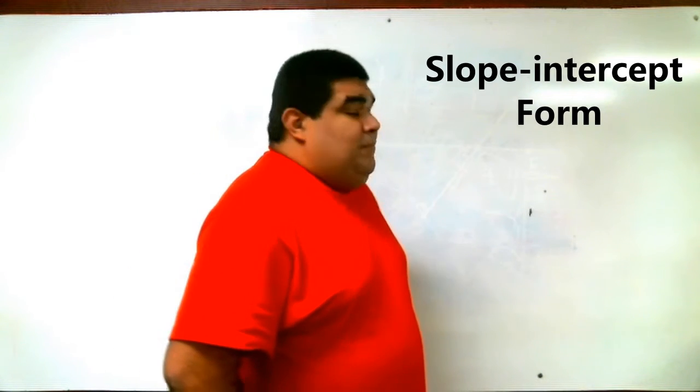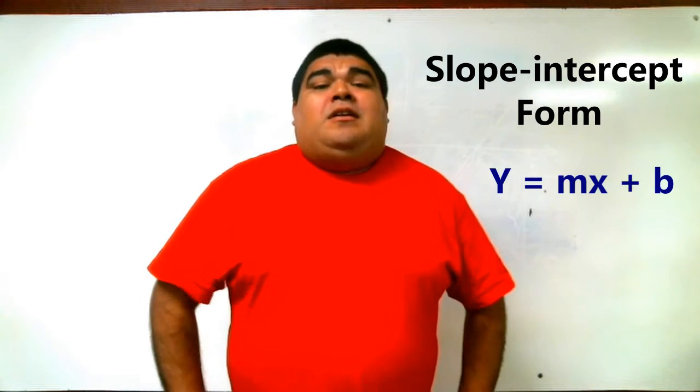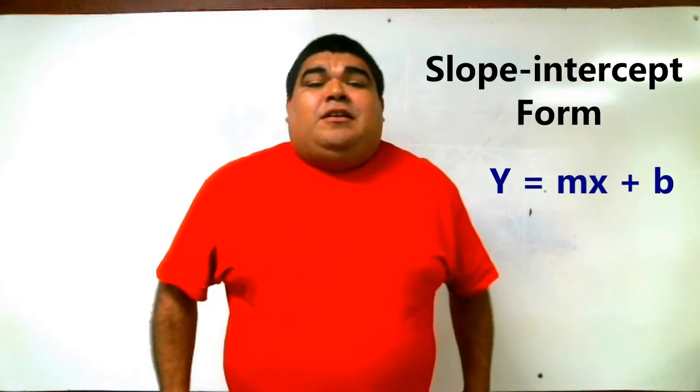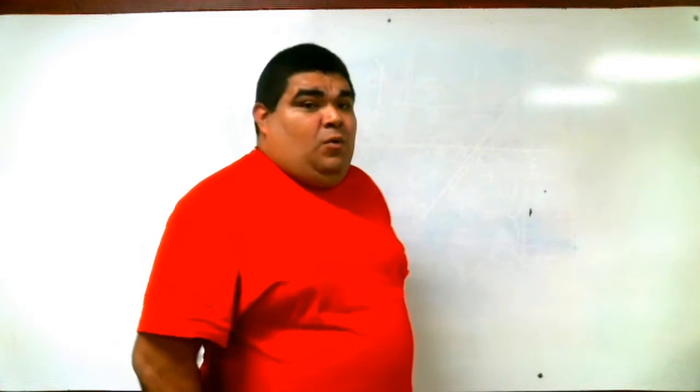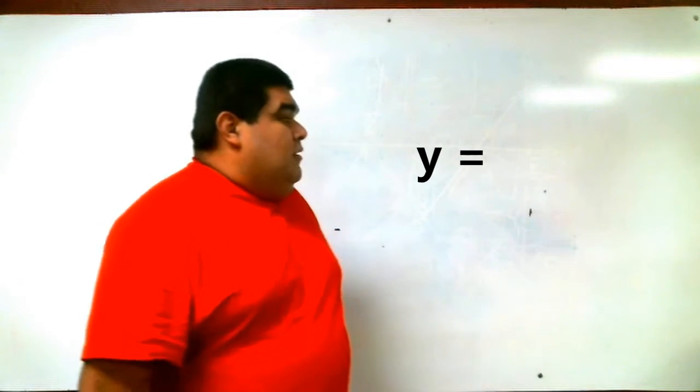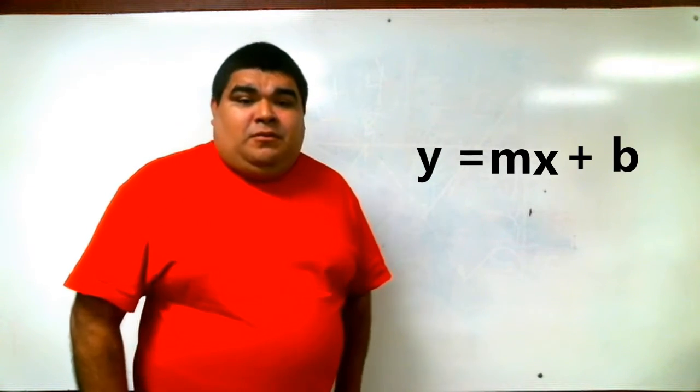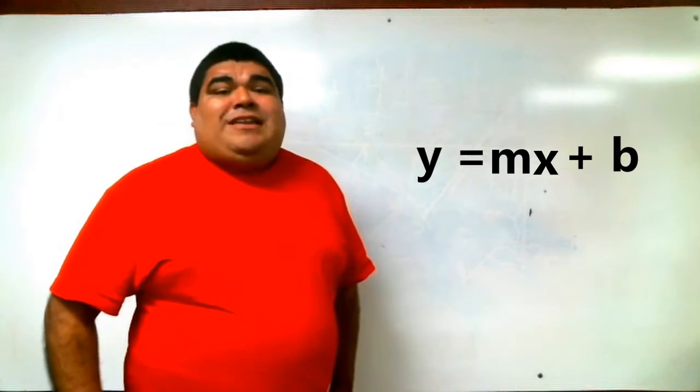The formula we're going to use today is called slope-intercept form. If you're familiar with it, good. If you're not, that's okay, because we're going to work on it together today. The formula states that the formula is written as y equals mx plus b. This is the formula. Make sure you write it down.